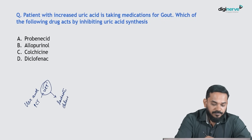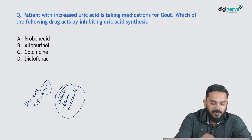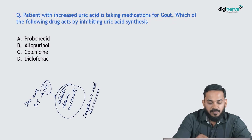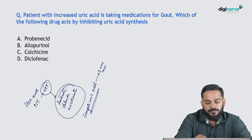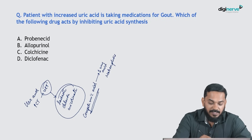The exchange also involves chloride or nicotinate. Probenecid is an agent that competes with uric acid for reabsorption, thereby reducing uric acid reabsorption. Other agents with a similar uricosuric action include benzbromarone.